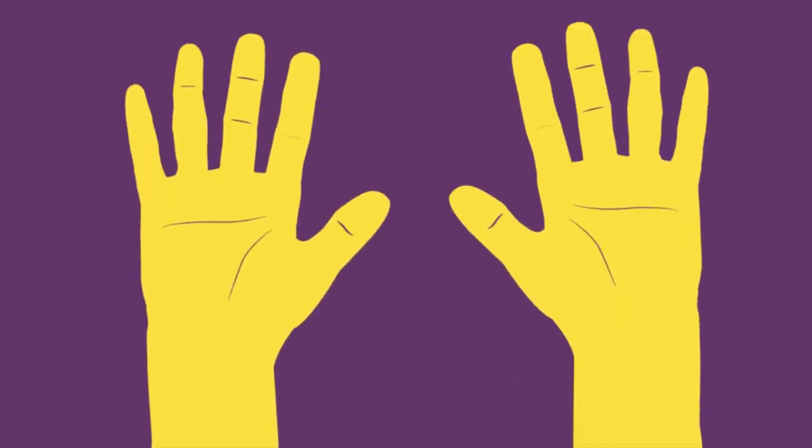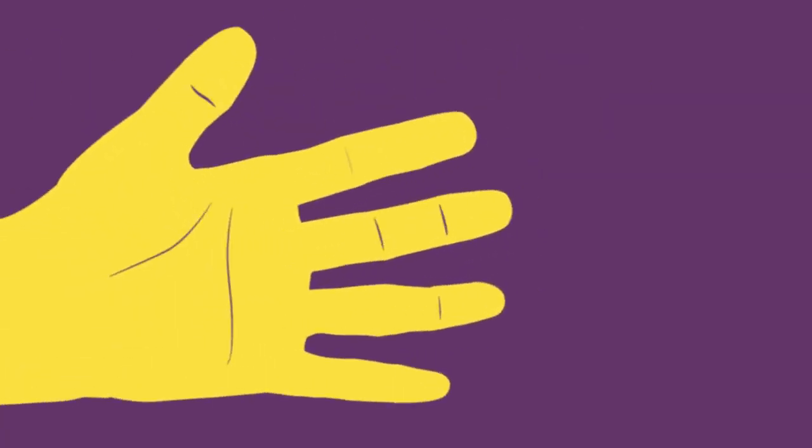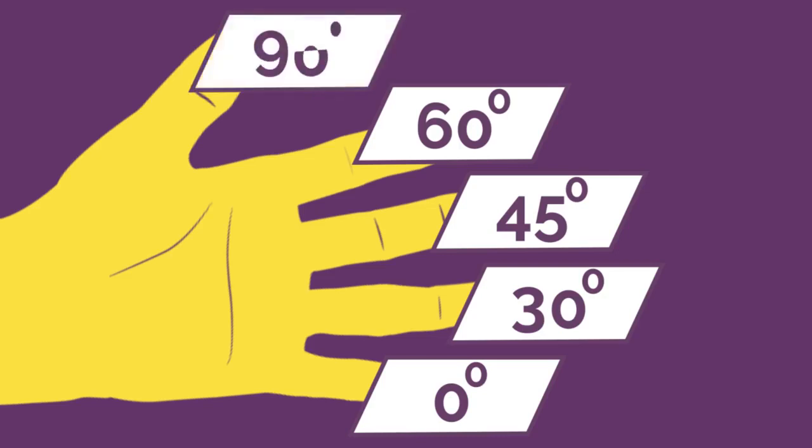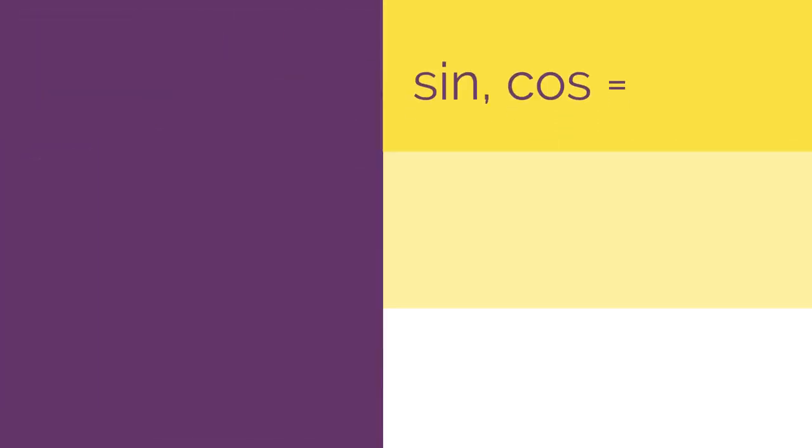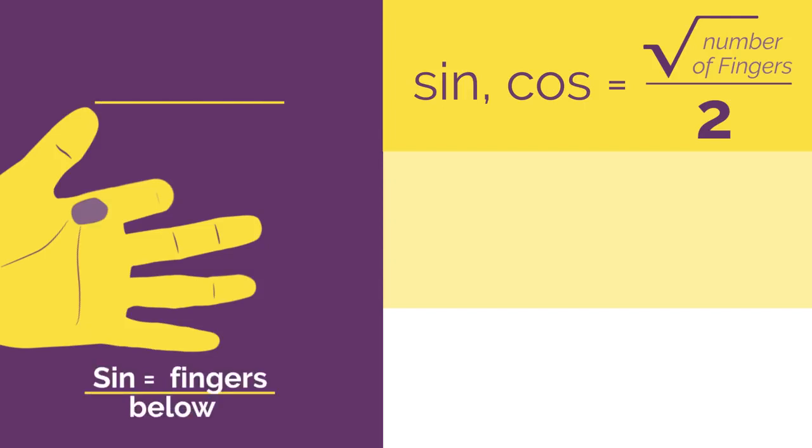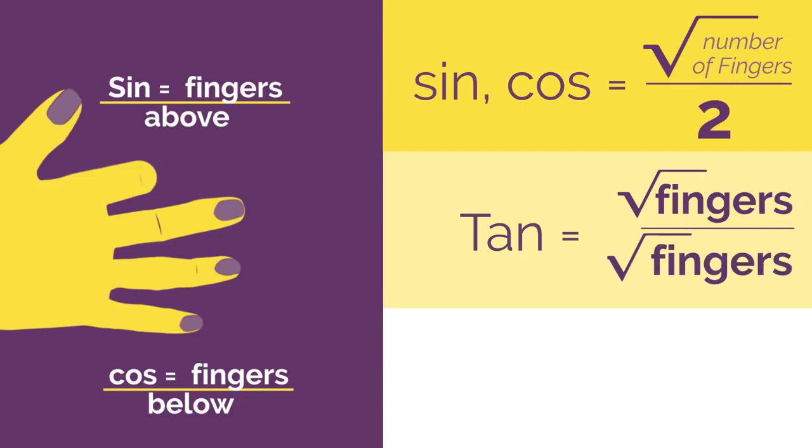So there we have a really easy way of remembering those exact values. We use our hand for special angles 0, 30, 45, 60, and 90. And just remember, for sine and cos, it's root fingers divided by 2. Sine is root fingers below the bent finger and cos is root fingers above the bent finger. And for tan, you just flip it over and it's root fingers divided by root fingers.